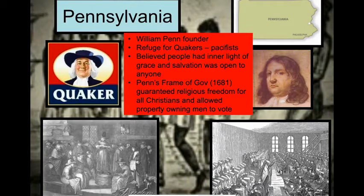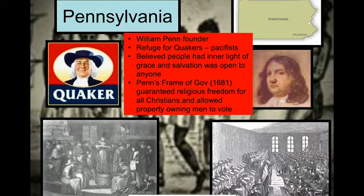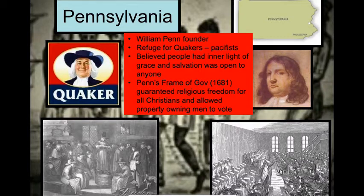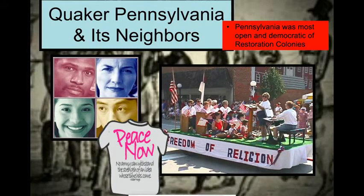Pennsylvania is going to be established during this time under William Penn, who was a Quaker and a pacifist. He believed that the inner light of grace and salvation anybody can obtain, and he guaranteed religious freedom for all Christians — a really big deal, as actual religious freedom and acceptance was not something known throughout the world at this time. He also allowed property-owning men to vote.